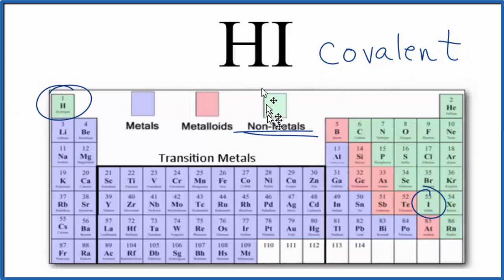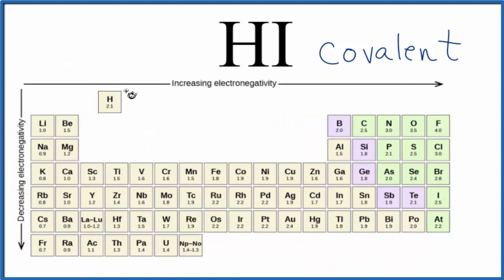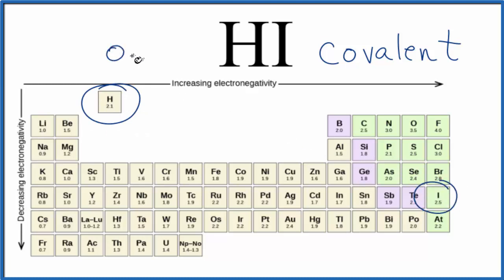We could also look at the difference in electronegativity between the hydrogen and iodine atom. Here on the periodic table, we have the values for electronegativity listed. Hydrogen is right here — it's 2.1. Iodine, that's 2.5. The difference there is only 0.4.